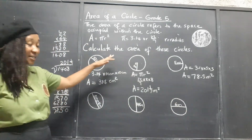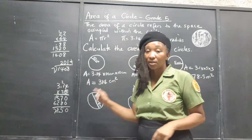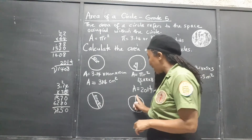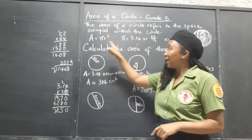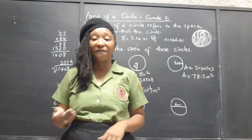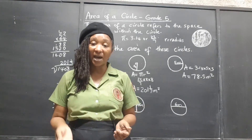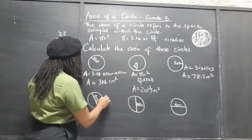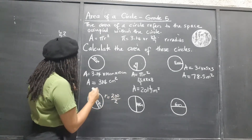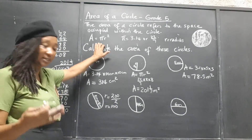Now they still want us to find the area of these circles, but if you look carefully you'll realize these are not the radius — these are the diameters. They gave us the diameter. But the formula says pi times the radius squared, so we have to do an additional step and find the radius first. It's pretty simple: the radius is half of the diameter, so we divide the diameter by 2 first to get the radius, and then go ahead and use pi times the radius times the radius.